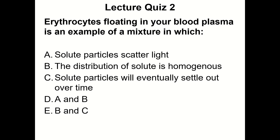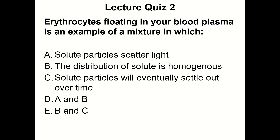Lecture quiz question number two: Erythrocytes floating in your blood plasma would be an example of a mixture in which — A: these solute particles do scatter light; B: the distribution of solute is homogenous; C: these solute particles, the erythrocytes, will eventually settle out over time; D: a combination of A and B; or E: a combination of B and C. Pause the video, make your choice, write down the letter beside lecture question number two, and then continue with the rest of the videos.